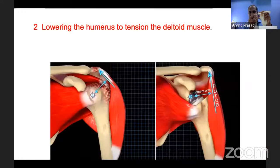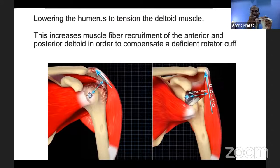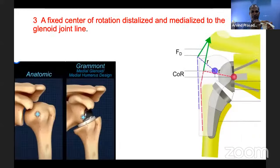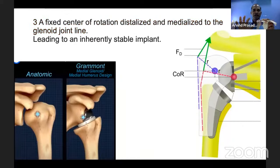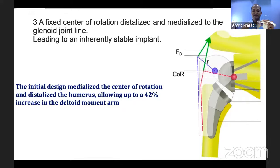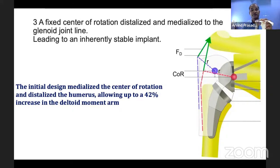The second principle is to lower the humeral component. This lowering tensions the deltoid muscle and increases muscle fiber activation both anteriorly and posteriorly, so that all parts of the deltoid act as abductors — compensating for rotator cuff deficiency. The third principle is the medial and distal center of rotation, which creates a very stable implant — more stable than the natural joint. Studies show a 42 percent increase in the deltoid moment arm, giving the deltoid power to act as an abductor throughout the full range of shoulder motion.